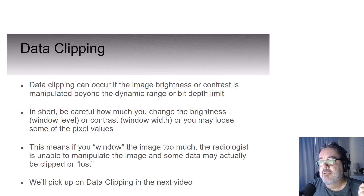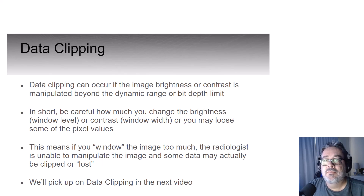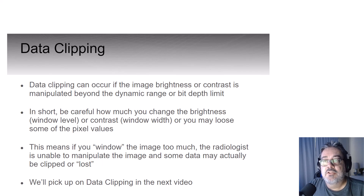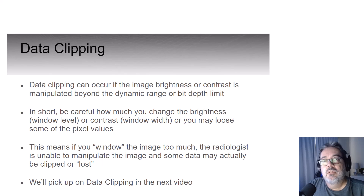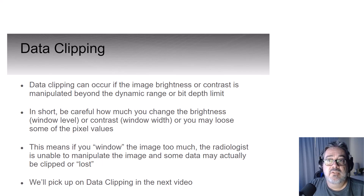I'm going to briefly touch on data clipping. Data clipping is what happens when you manipulate the window width and/or window level — the brightness and contrast — beyond the dynamic range or bit depth limit of that system. When you adjust brightness and contrast at the technologist control panel before it's sent to the radiologist, you're essentially limiting the data you're sending them for interpretation. Adjusting the control panel is only meant to QC your images — never use it to make your image look more presentable before sending it to PACS. If you use it at all, just reset it to its original state before you send it over.